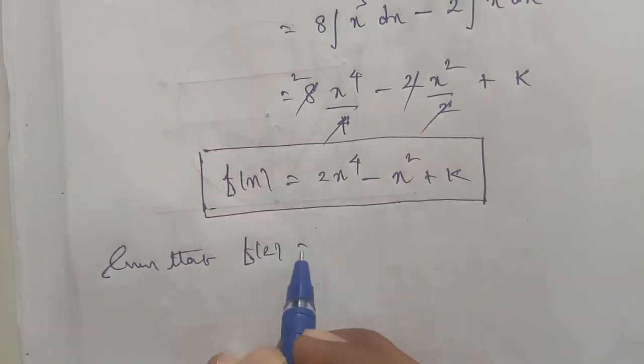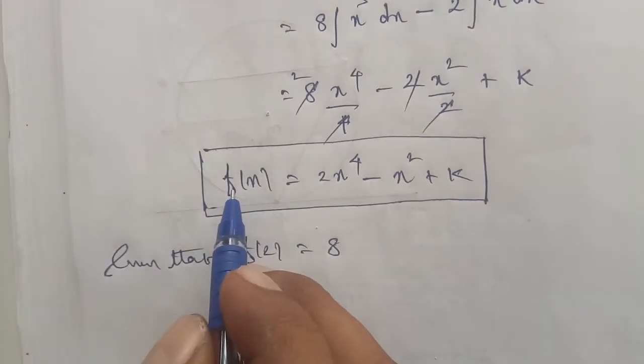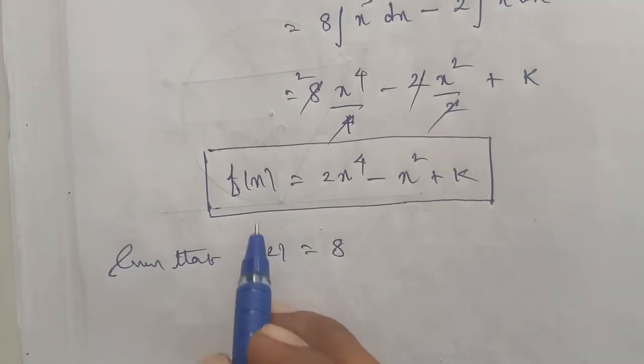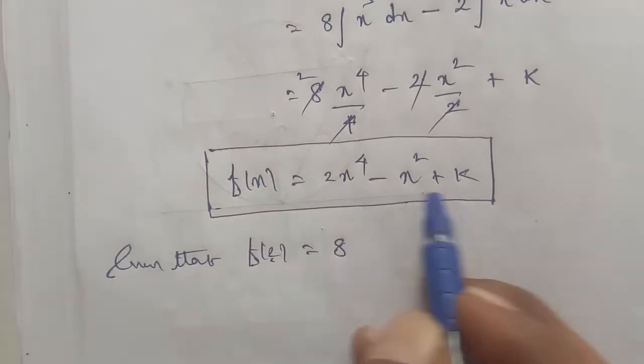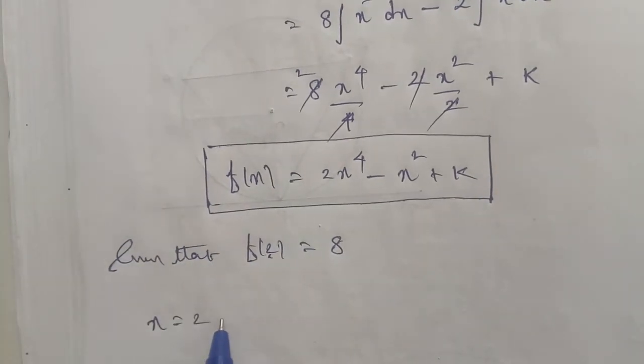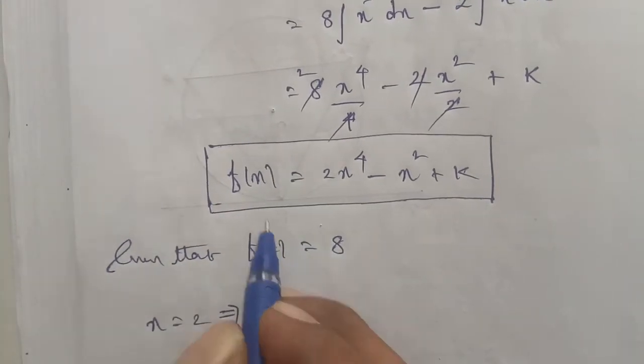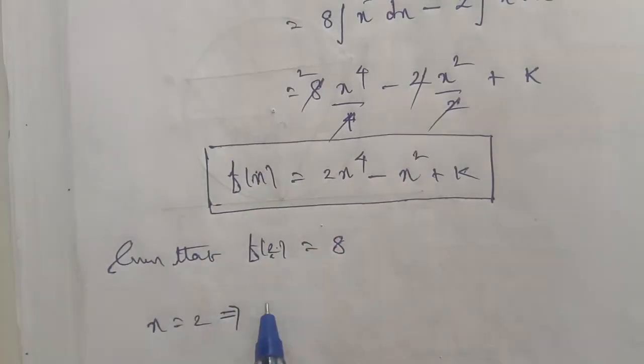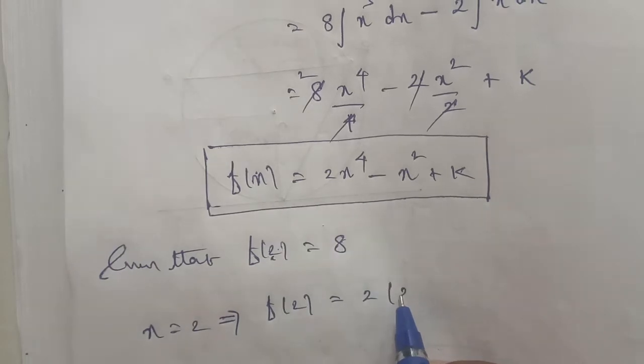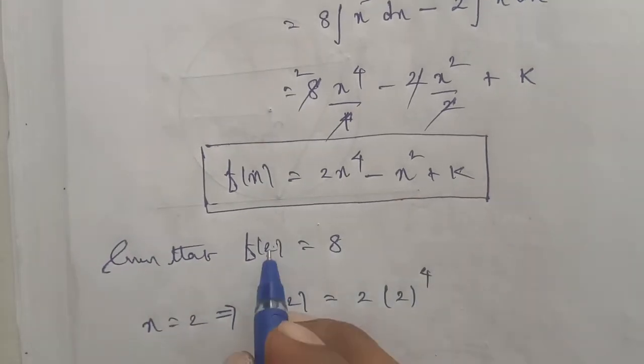Given that f(2) = 8, we substitute x = 2 into our answer. So f(2) = 2(2)⁴ - (2)² + k.